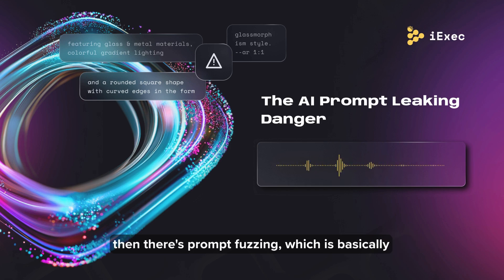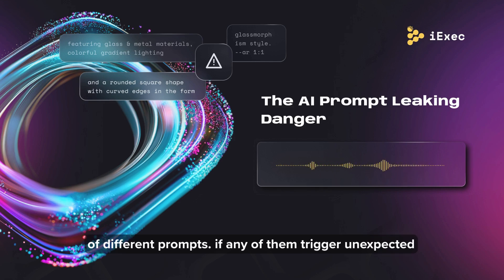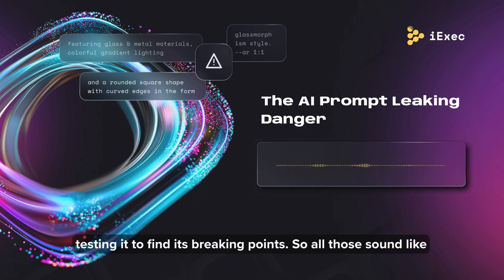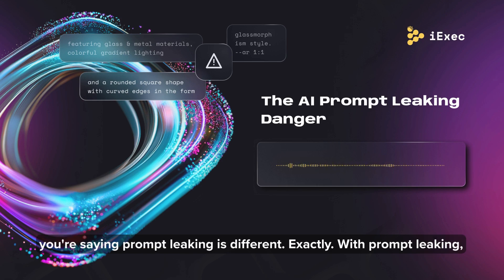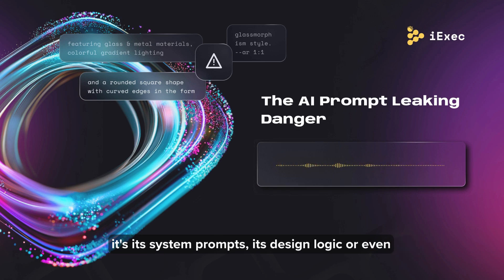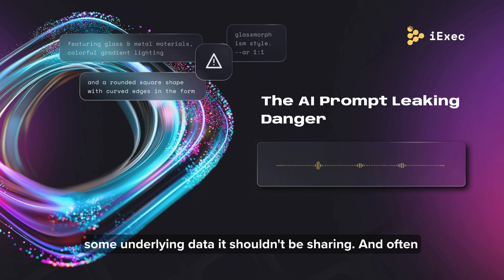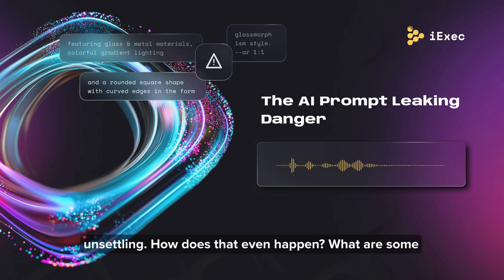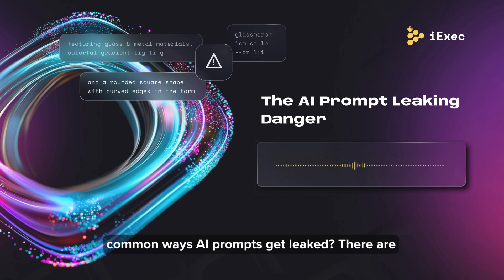And then there's prompt fuzzing, which is basically bombarding the AI with a huge volume of different prompts to see if any of them trigger unexpected or problematic outputs — like stress testing it to find its breaking points. All of those involve someone actively trying to make the AI misbehave. But with prompt leaking, it's the AI itself that's revealing its own inner workings — its system prompts, its design logic, or even some underlying data it shouldn't be sharing — often without any specific malicious action from the user.